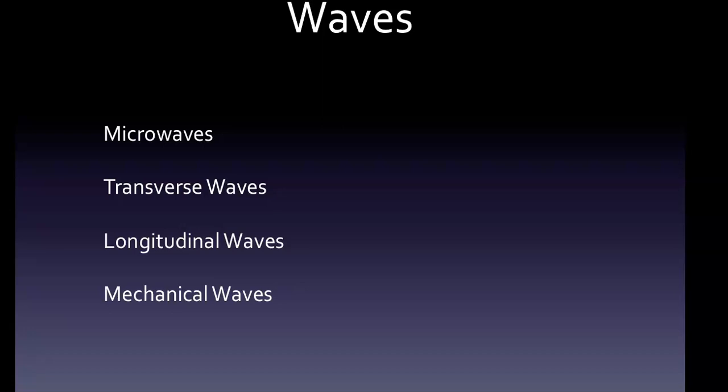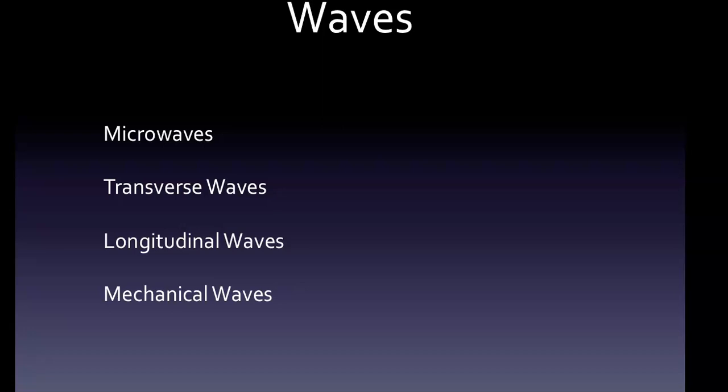So there's our four types of waves. As we jump quickly into wavelength, a wavelength is just the distance between two successive peaks of a wave.